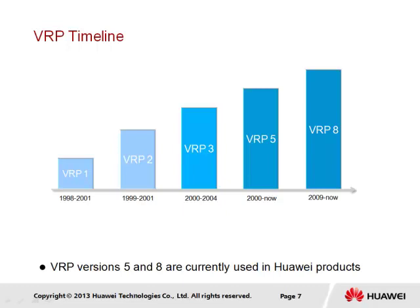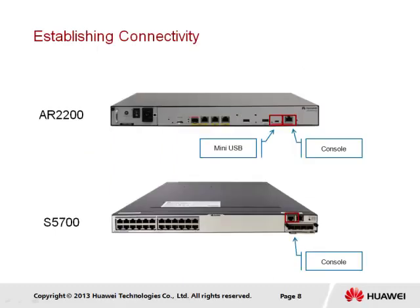Numerous versions of the Versatile Routing Platform have been developed, and the architecture has over time become increasingly modular to support greater efficiency of operation. Many products currently support VRP version 5, and some higher performance products operate using VRP version 8. Two common products shown here are the AR2200 router, part of the ARG3 series of routers, and the S5700 switch from the SX7 series of switches. In both cases, VRP is used to implement the product features.